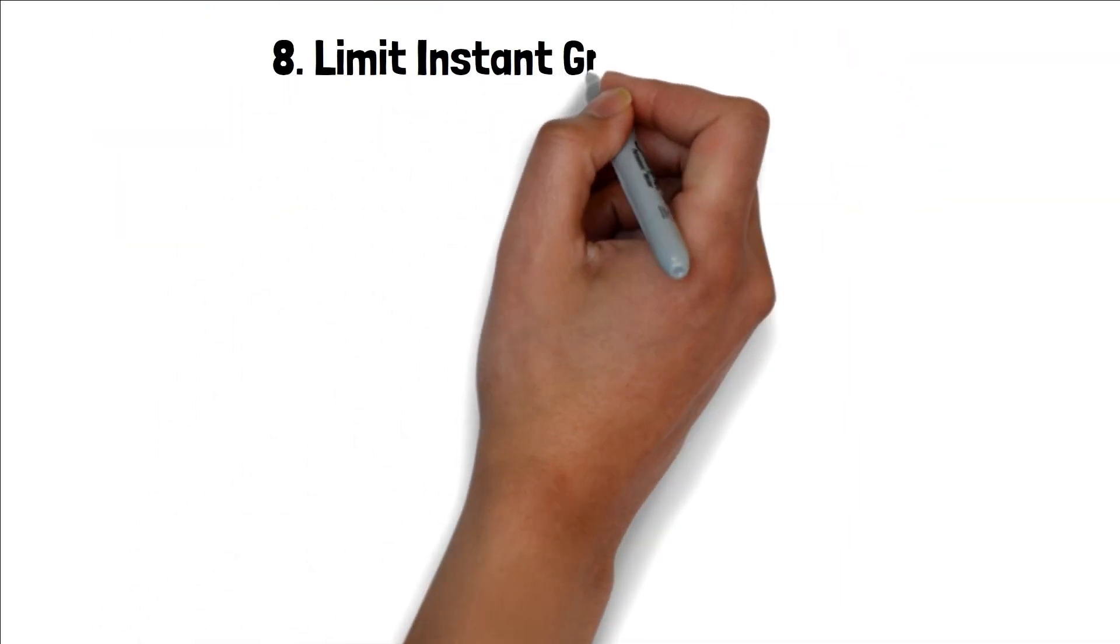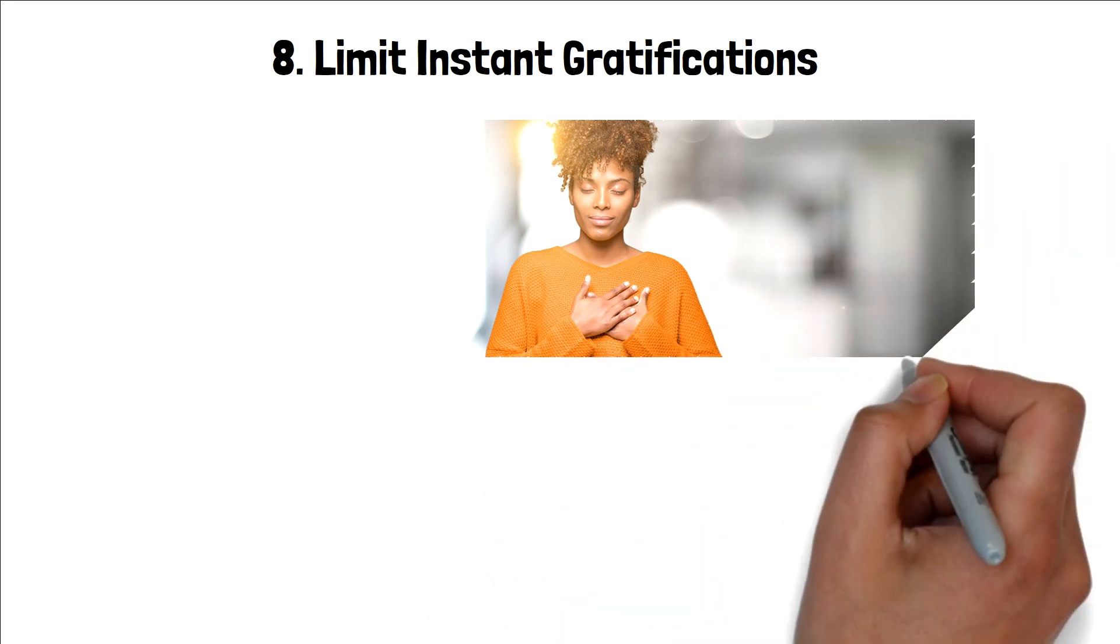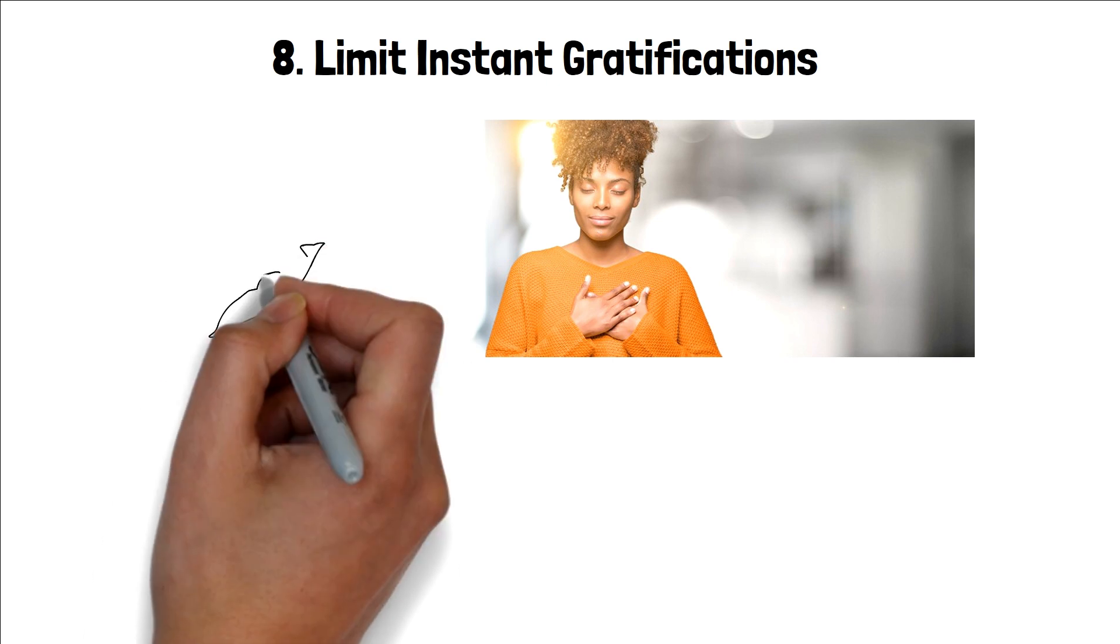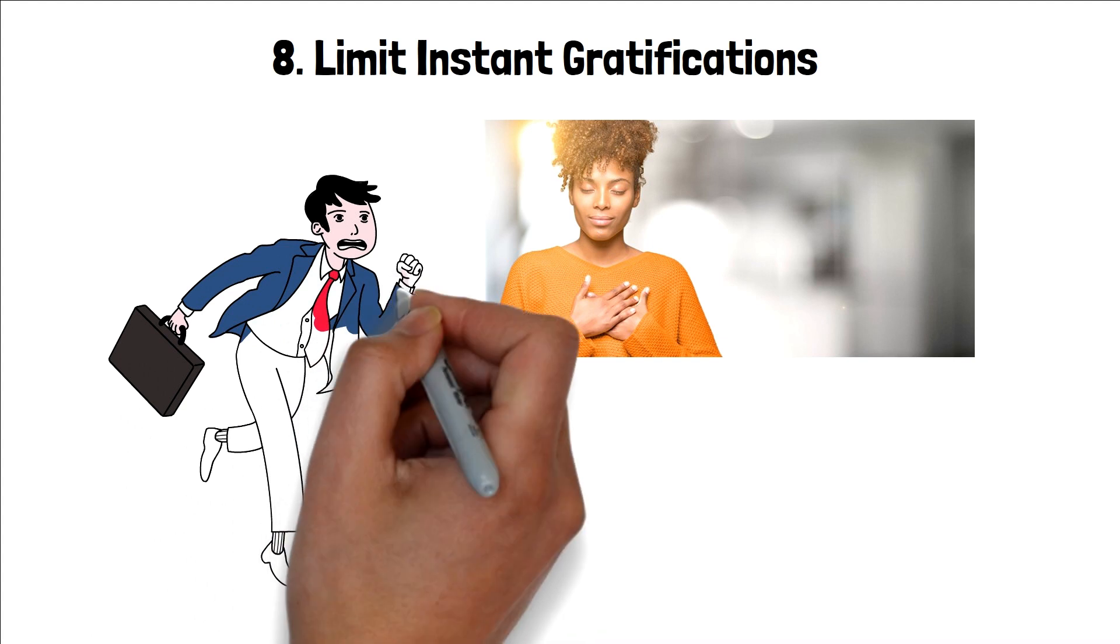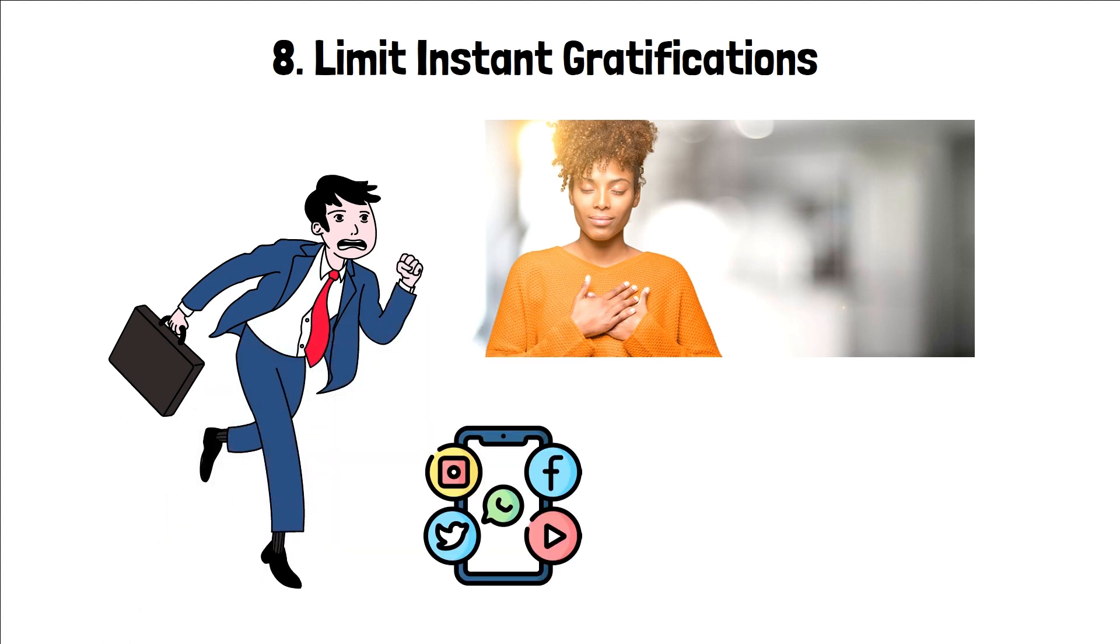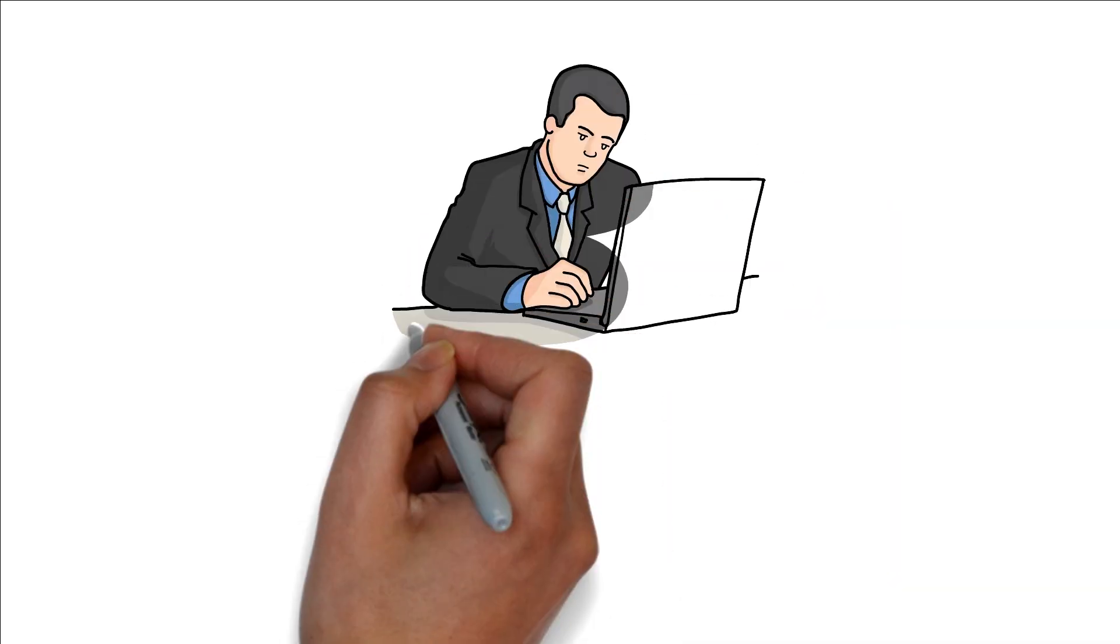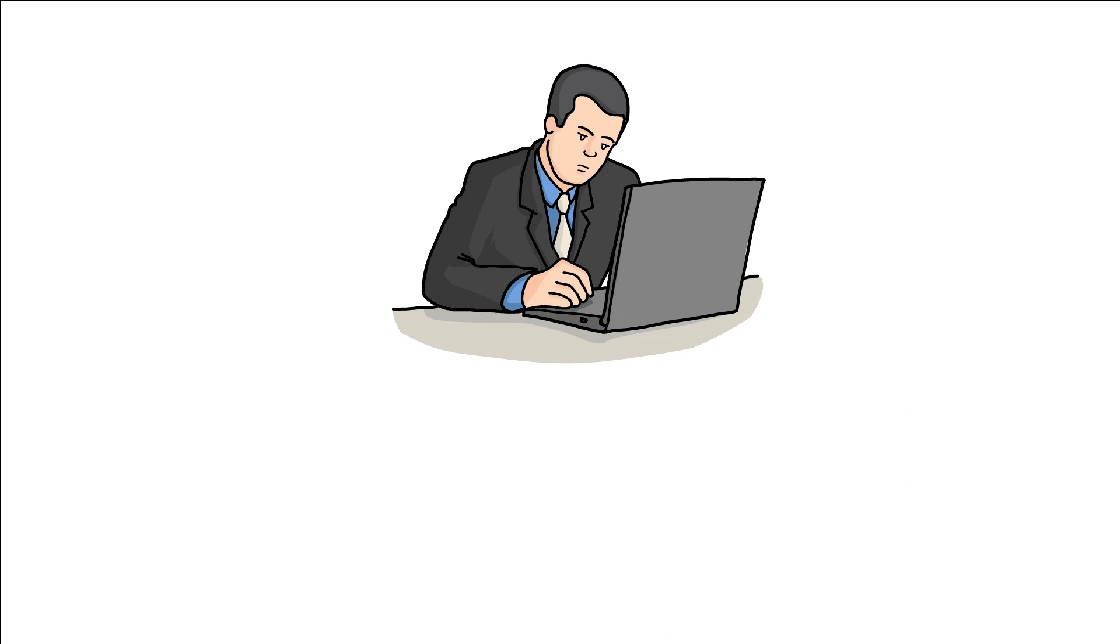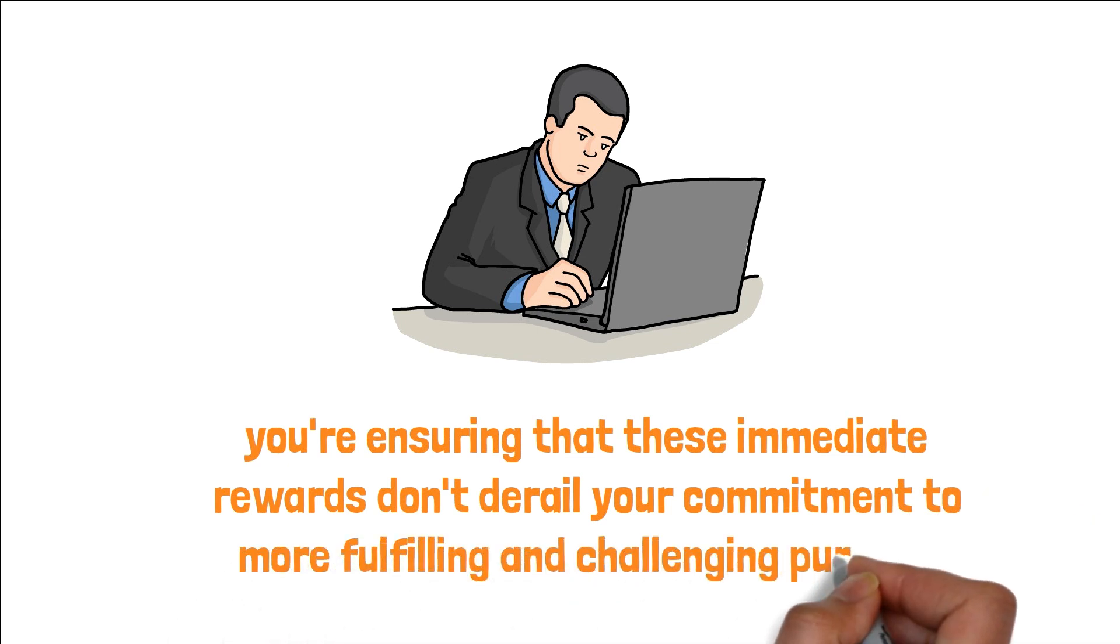8. Limit instant gratifications. Following a dopamine detox, it's pivotal to remain vigilant about the allure of instant gratifications. While it's not about cutting them out completely, it's crucial to curtail their dominance. Allocate specific times in your day for activities like scrolling through social media, indulging in gaming, or catching up on TV shows. These pleasures, though enjoyable, should not overshadow your renewed focus on productivity and meaningful relaxation. By setting boundaries, you're ensuring that these immediate rewards don't derail your commitment to more fulfilling and challenging pursuits.